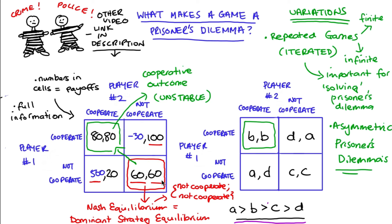There are many other variations in the literature: some add a third option such as a 'do nothing' strategy, others involve three players. All these variations are still called prisoner's dilemmas. What you really need is that central characteristic: a structure of incentives where there is a failure of cooperation that is mutually bad for all players. That's what makes a game a prisoner's dilemma in its most basic form.